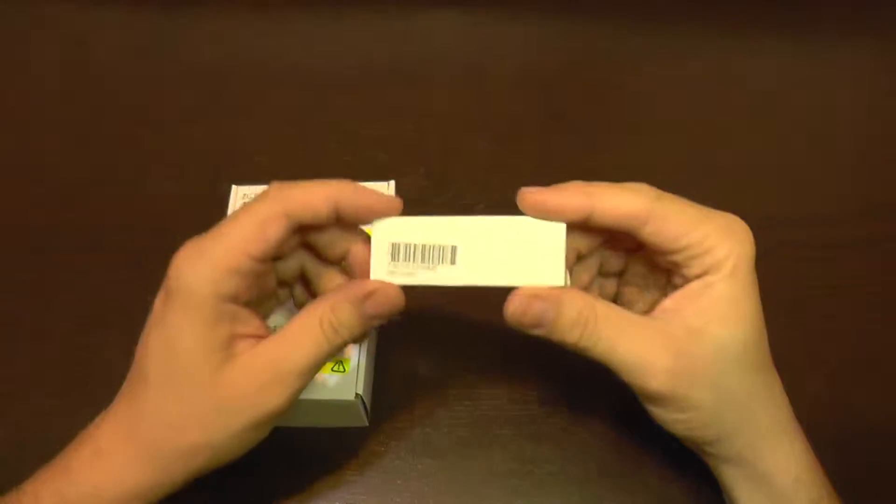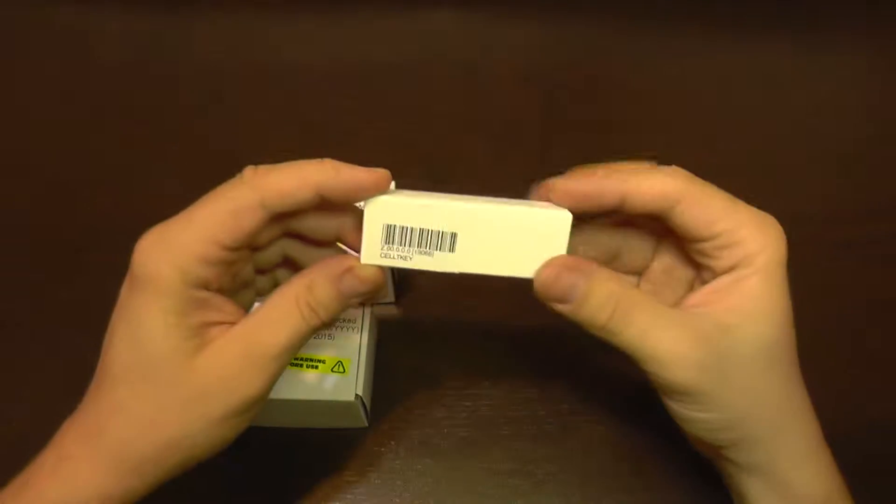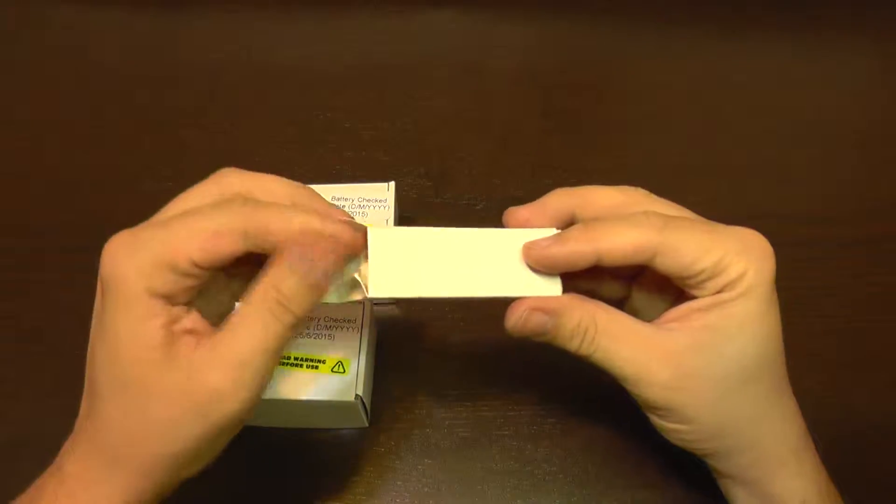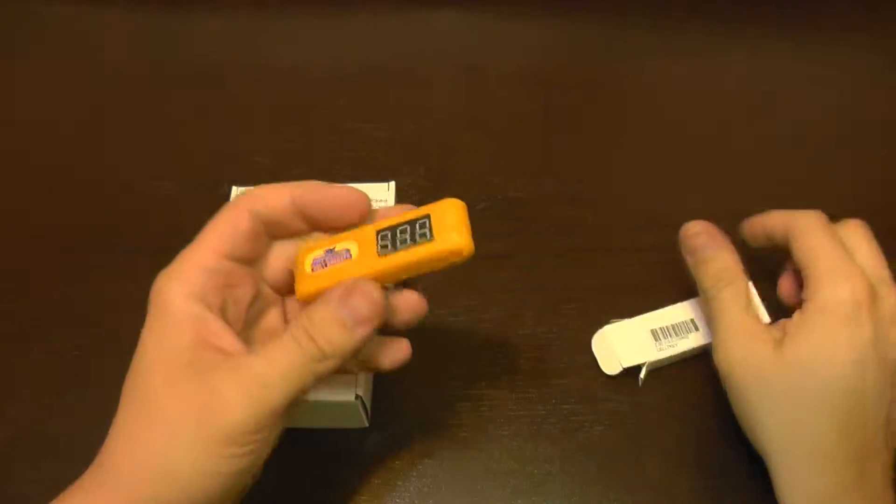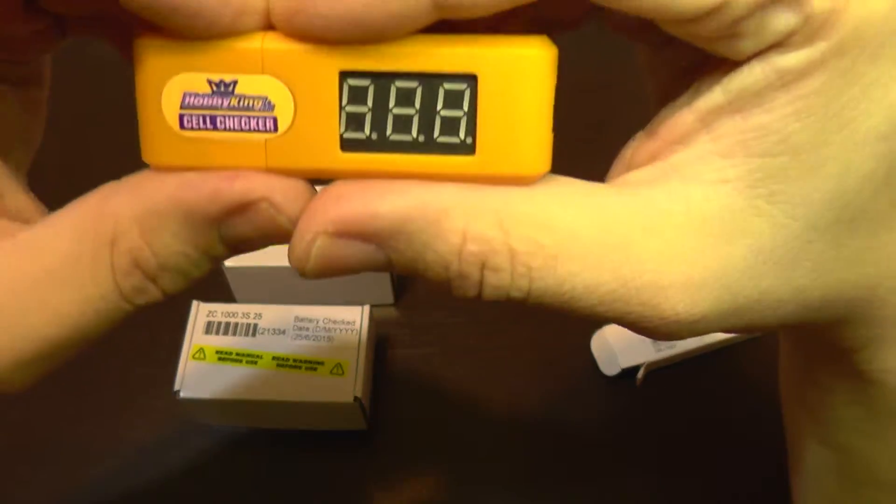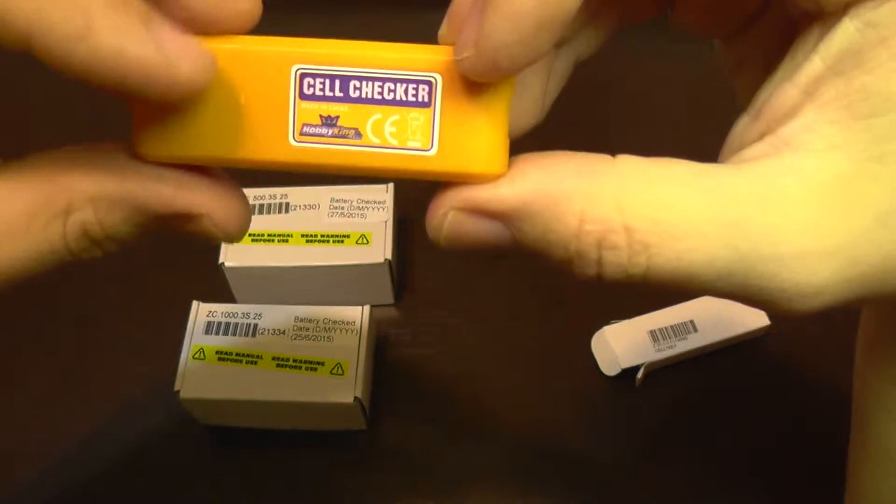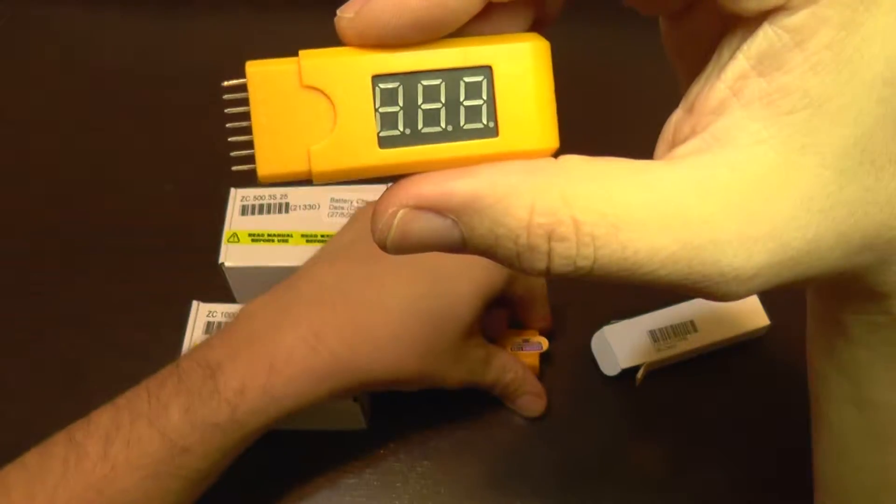Hello, today I'm going to show you the cell checker from HobbyKing. It's a small device that enables you to quickly check your lithium batteries for your aircraft. This one has the format of a USB drive and it can check up to six cell batteries.